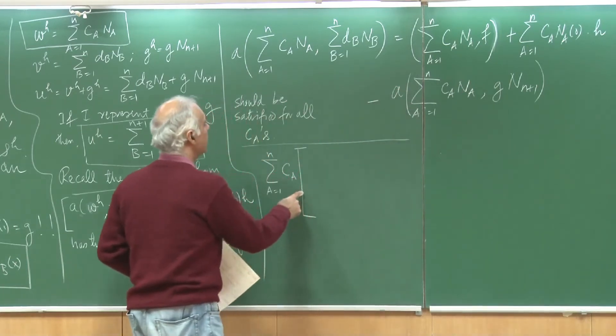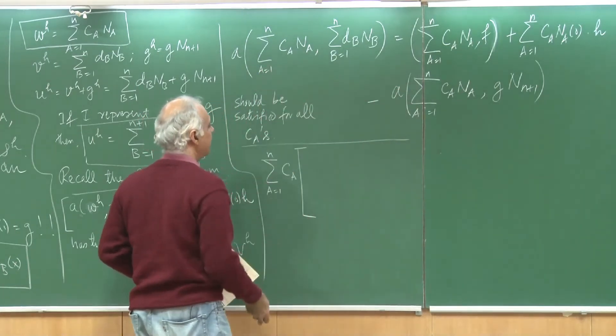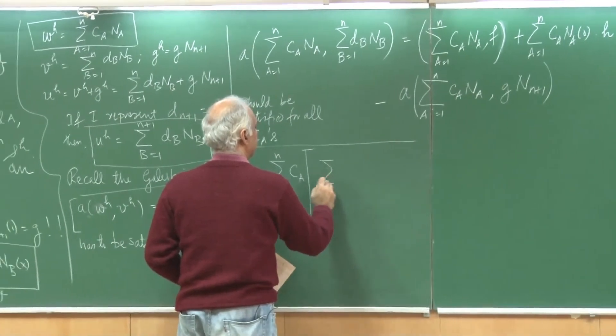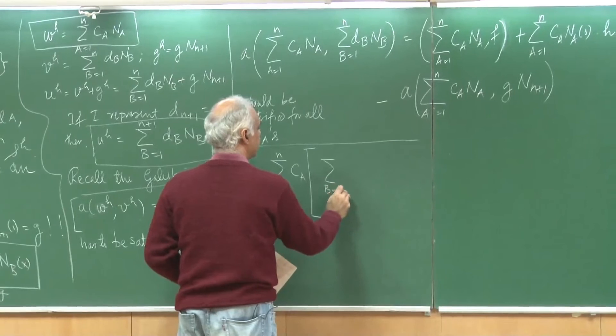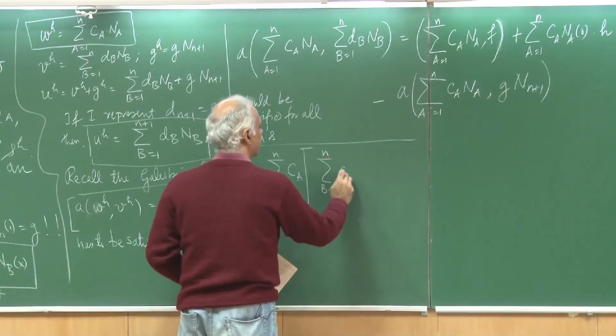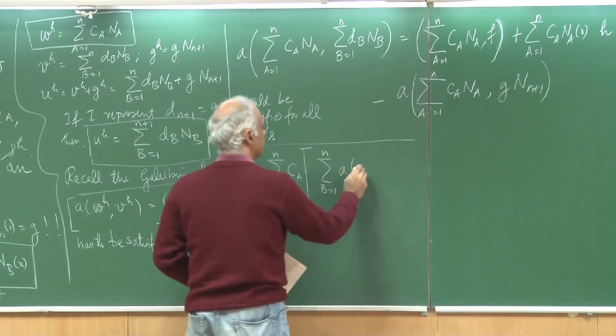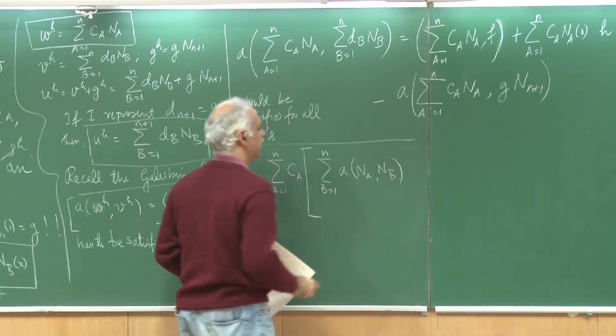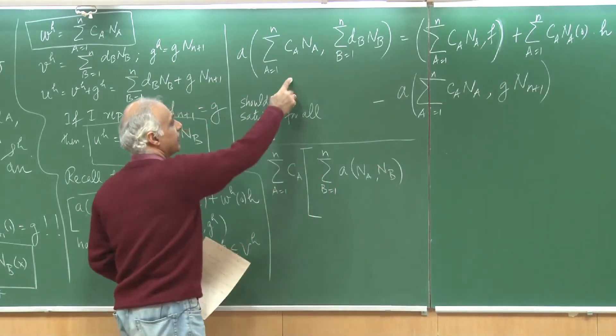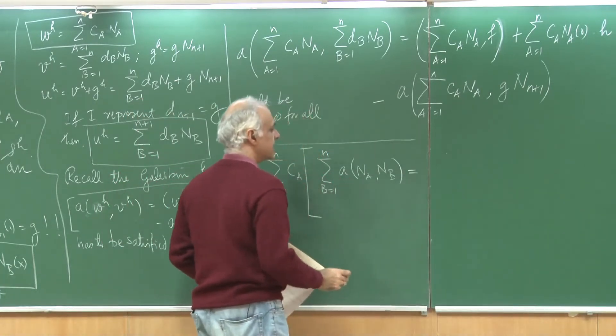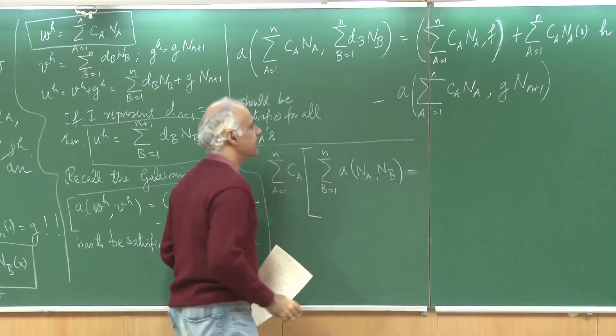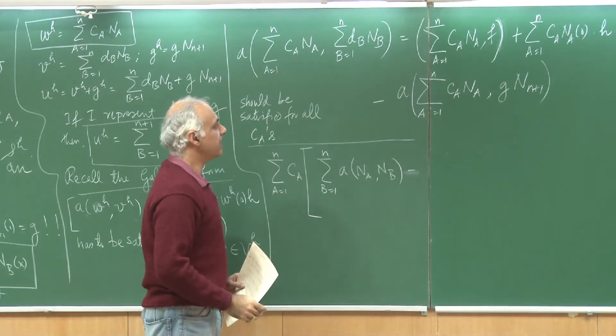I will put this one in square brackets and then the remaining term I could again pull out this summation b goes from 1 to n and I am left with n_a comma n_b. This I get from the first term and maybe I will pull the other ones on the left hand side.